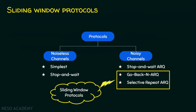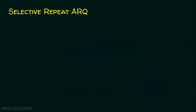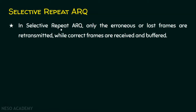Let's see the working principles of selective repeat ARQ theoretically. We know very well that go-back-N ARQ and selective repeat ARQ are the sliding window protocols. In today's session, we are mainly focusing on selective repeat ARQ. In selective repeat ARQ, only the erroneous or lost frames are retransmitted, while correct frames are received and buffered.